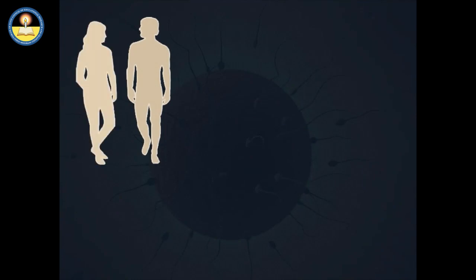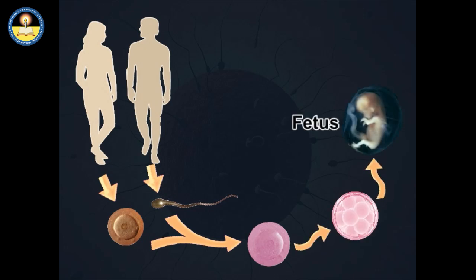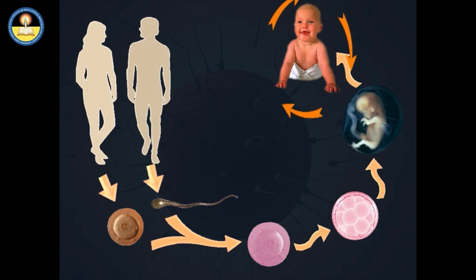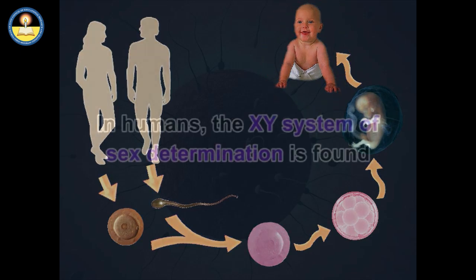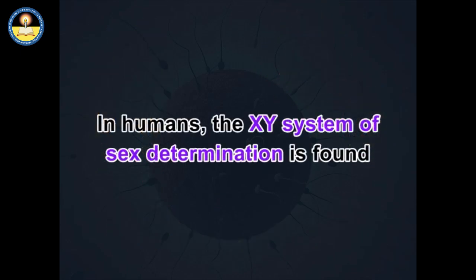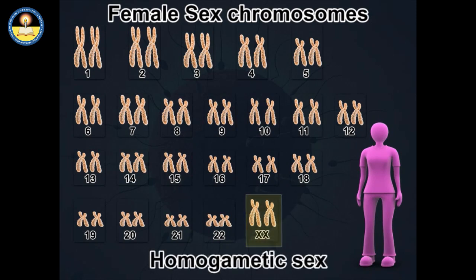In sexual reproduction, male and female gametes fuse during fertilization to form a zygote. This zygote then develops into a fetus. The sex of the child — male or female — depends on the type of sex chromosomes involved in the fertilization. In the XY system of sex determination found in humans, females have two of the same kind of sex chromosome, XX, and are called the homogametic sex.